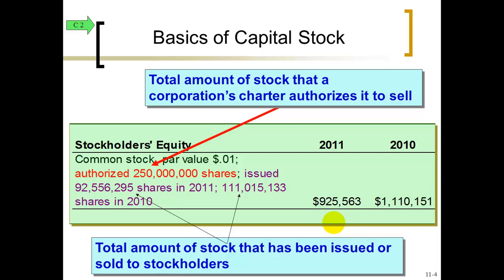One of the main things that confuses students in this chapter is the difference between shares — which are like pieces of paper — and the dollar amounts recorded in our journal entries and financial statements. Here is part of the balance sheet showing the stockholders' equity section. One of the main accounts every corporation has is called common stock. You have to register with the government, and at that time you ask permission to sell shares — that permission is called authorized shares. Here the company is authorized to sell 250 million shares.